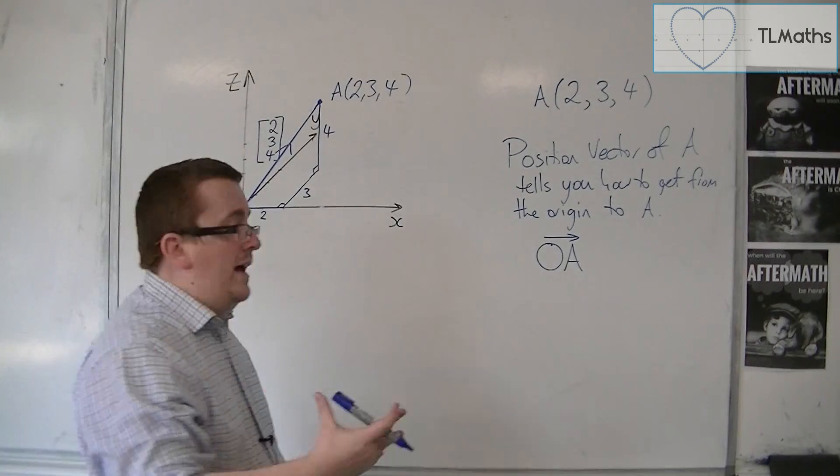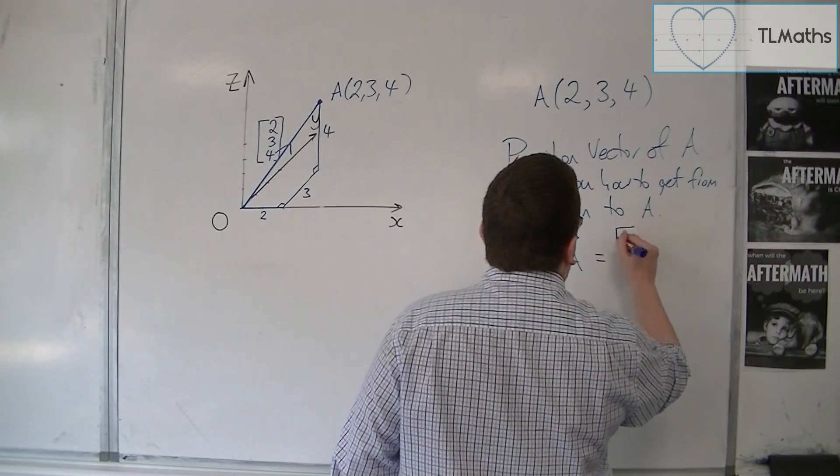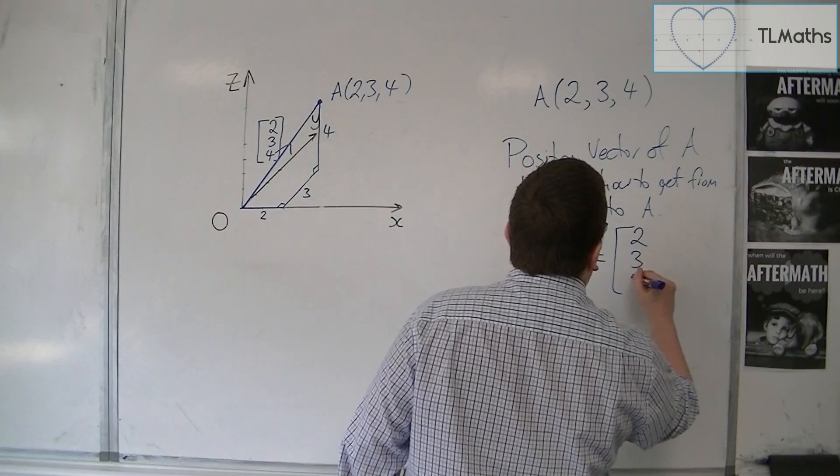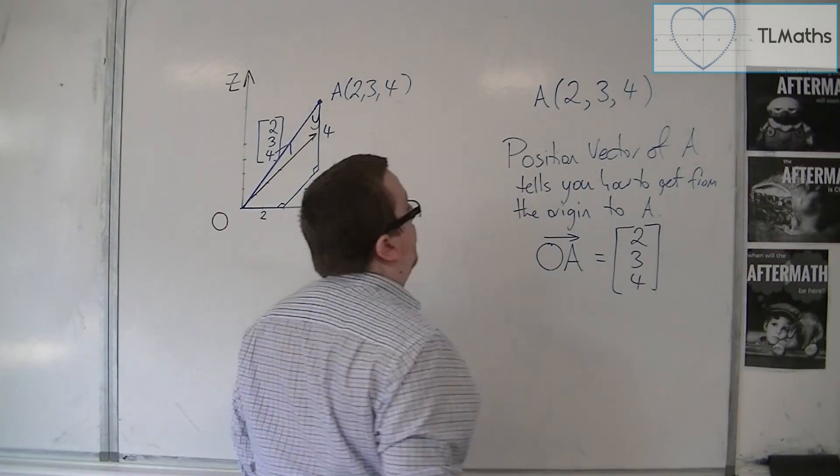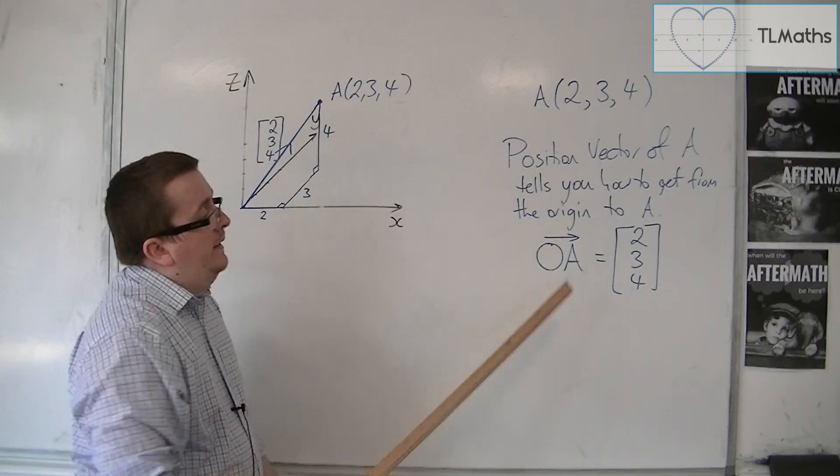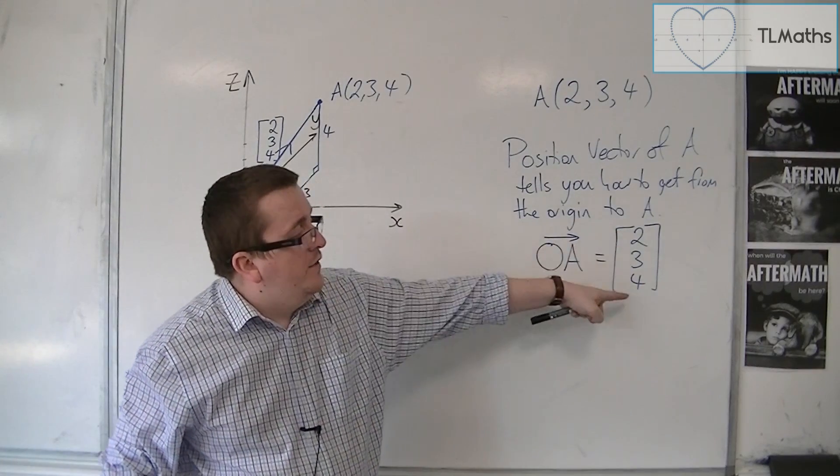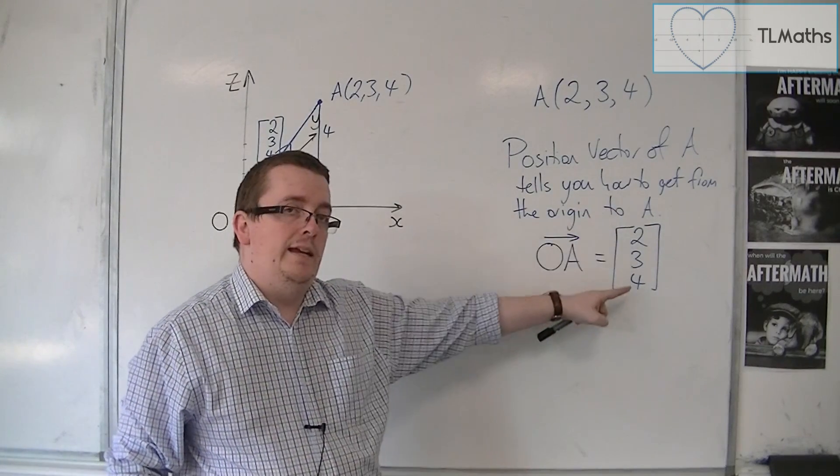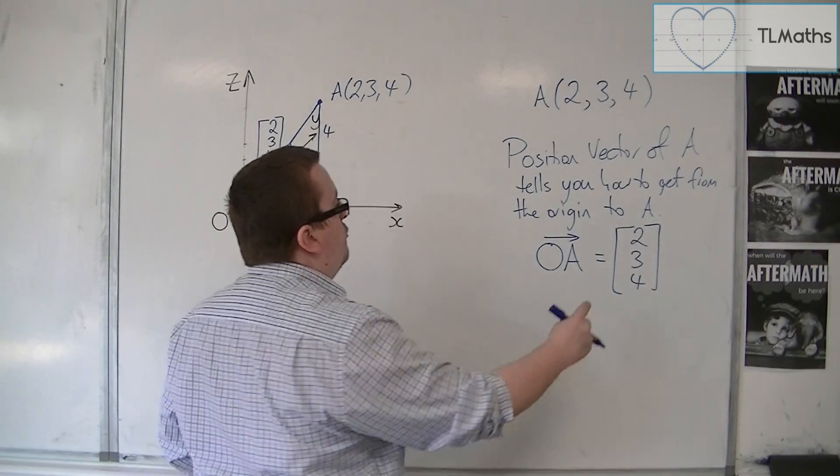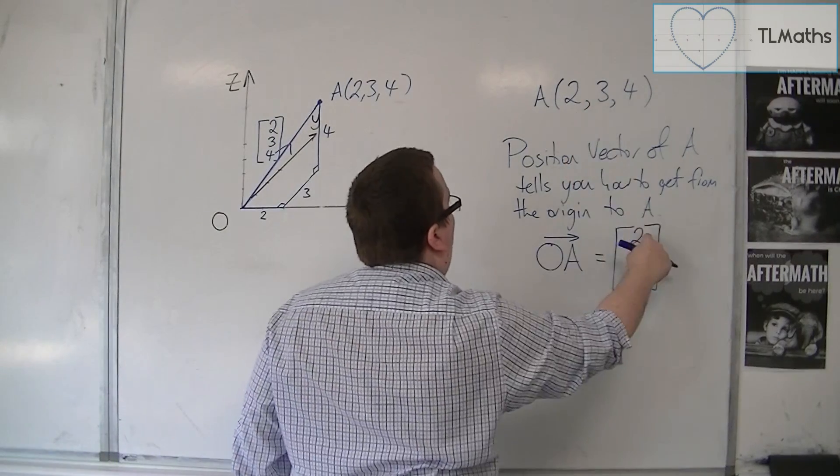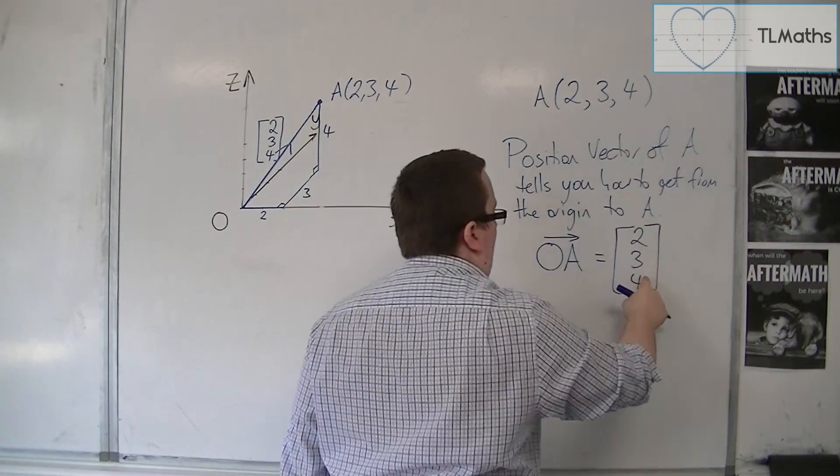So that is the vector that I'm looking for, 2, 3, 4. So coordinates are given horizontally like this, and vectors are given vertically like this. Each one corresponds. So that's your x value, y value, z value.